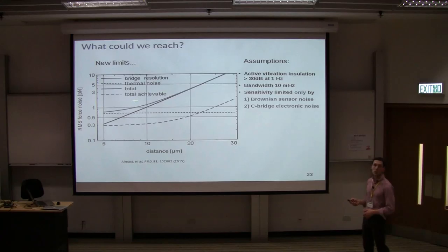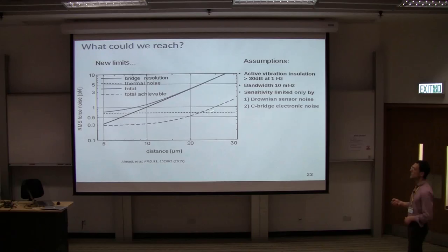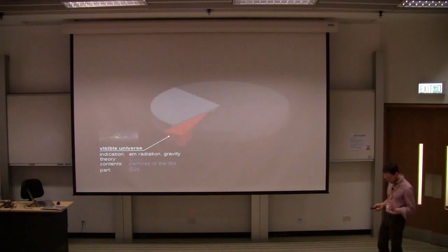Then what could we reach? If we assume that we just have electronic noise from our bridge and we have the thermal noise or the Brownian noise from our sensor, then we can do the math and then we see what is the actual force resolution we can reach. If you look at the graph, it tells us that at 10 micrometer distance, it's the blue curve. With the current setup as it is, we could reach 1.2 piconewtons. If we make small improvements, meaning the bridge circuit and a bit of larger mass of our sensor to reduce Brownian noise, we could go down by a factor of 4. So these are the current limits. There are ideas how to go further. But first, I would like you to follow me into the second part of the talk.